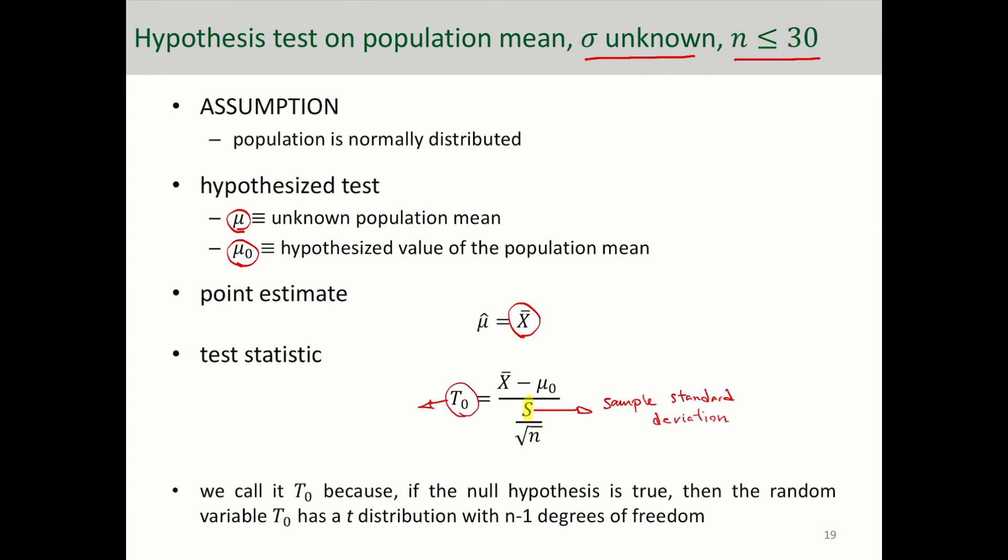And we call this test statistic t-score. So we call it t-score t-naught because if the null hypothesis is true, then the random variable t-score has a t-distribution with n minus one degrees of freedom. And we'll talk about this t-distribution, what is the degree of freedom, in the next video.